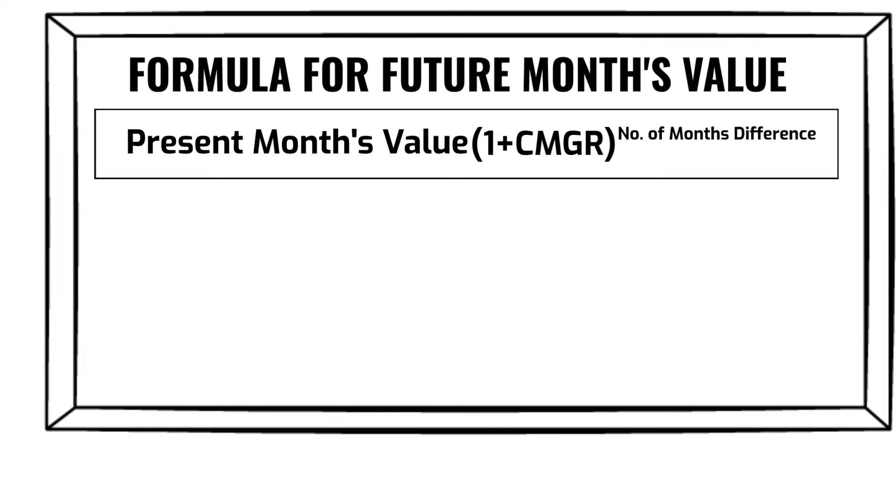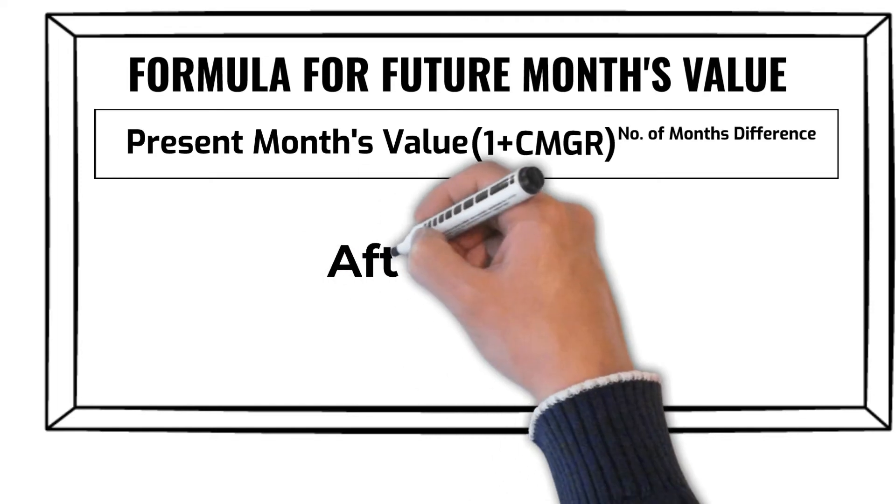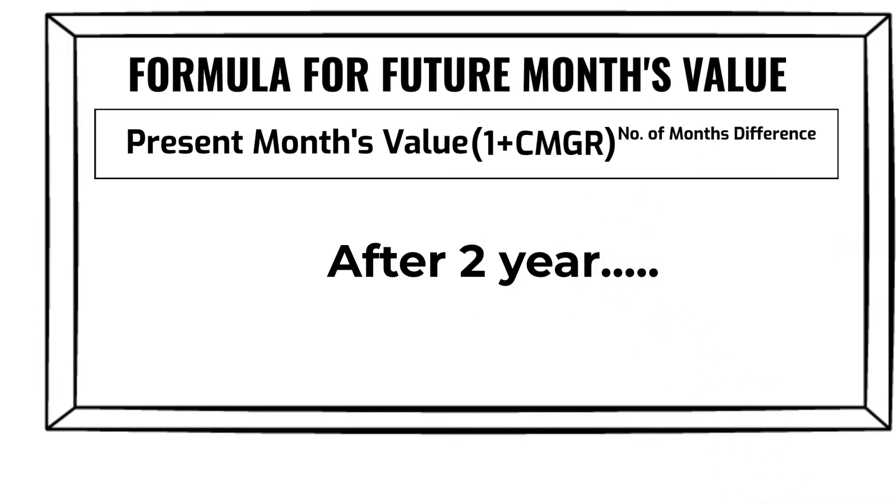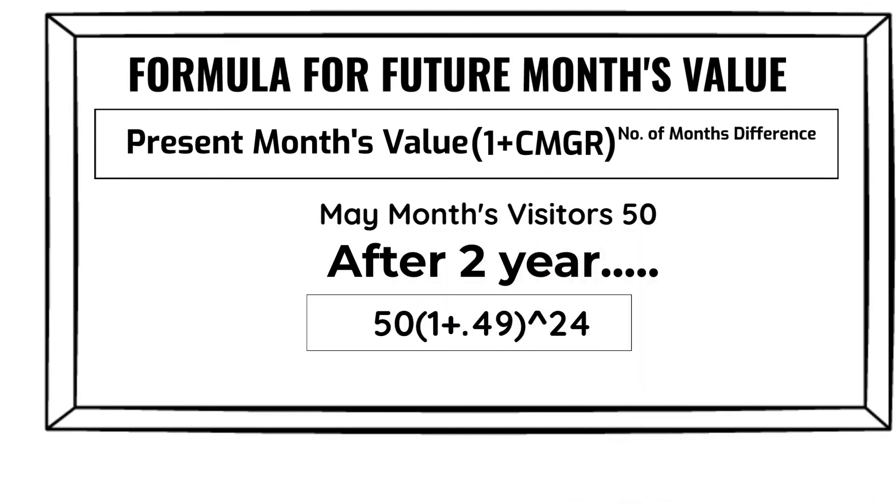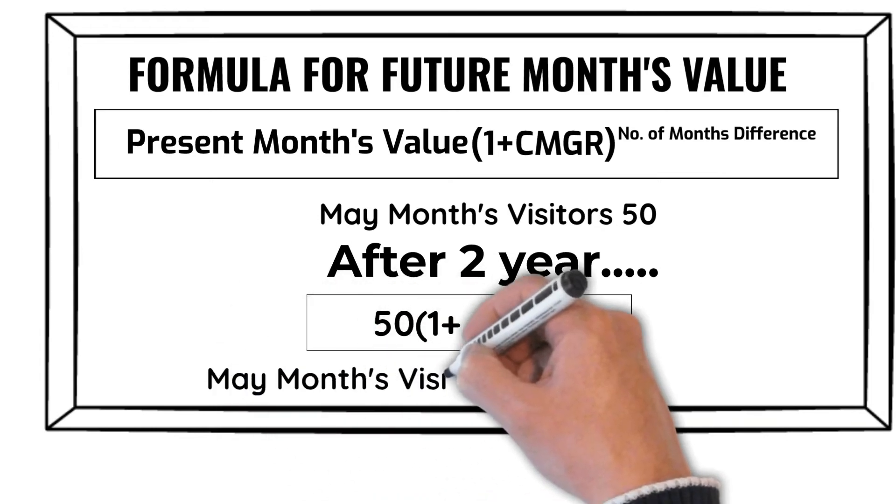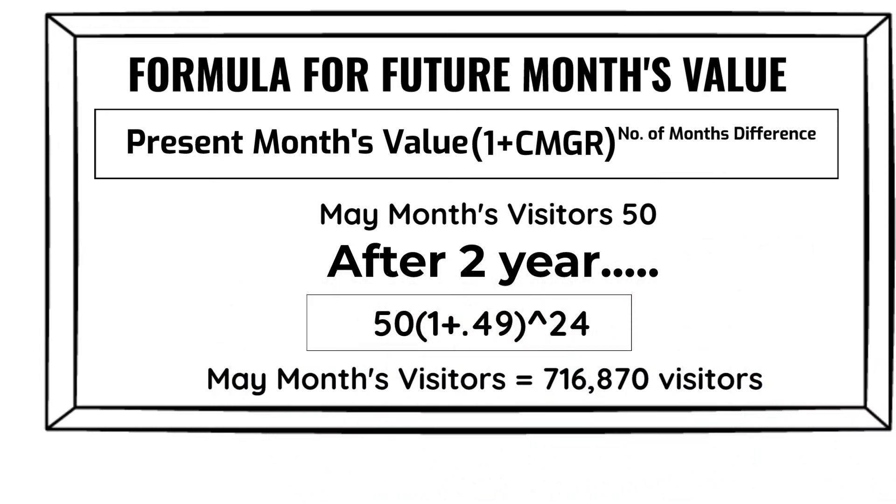Suppose the investors of Mr. Smith in the previous example are taking a two-year horizon. They want to calculate how many monthly visitors Mr. Smith will be getting after two years from now. May month's visitors are 50. We are looking to find May month's visitors after two years. We can easily calculate using the formula, and we get 716,070 visitors in the month of May.